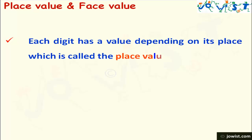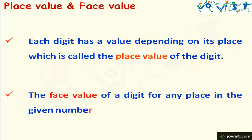Each digit has a value depending on its place which is called the place value of the digit. The face value of a digit for any place in the given number is the value of digit itself.